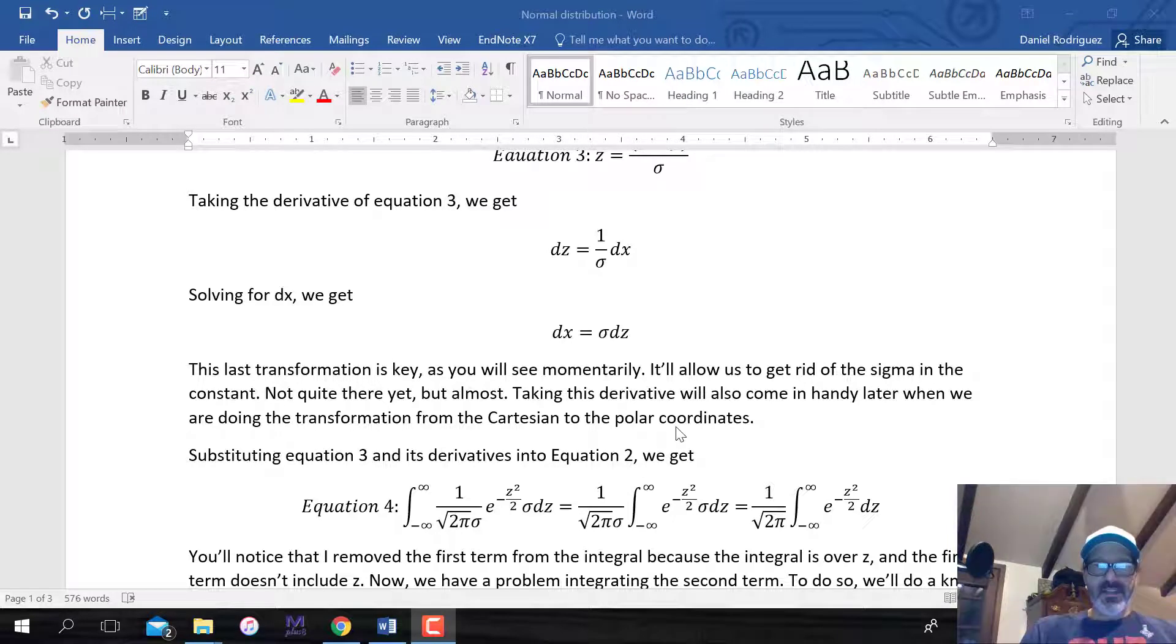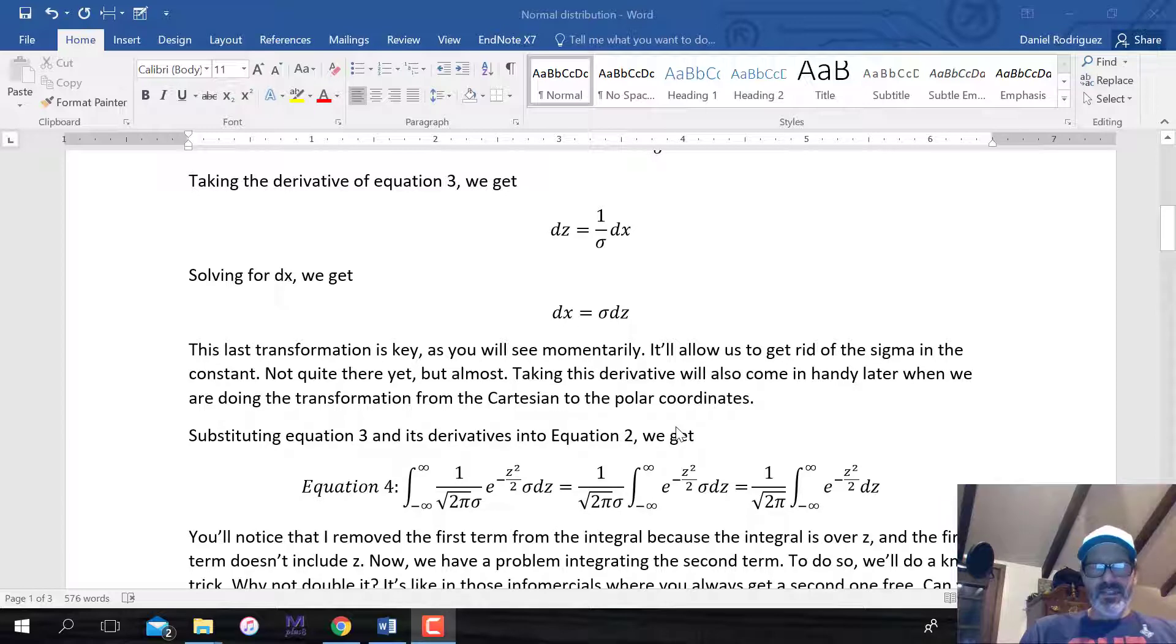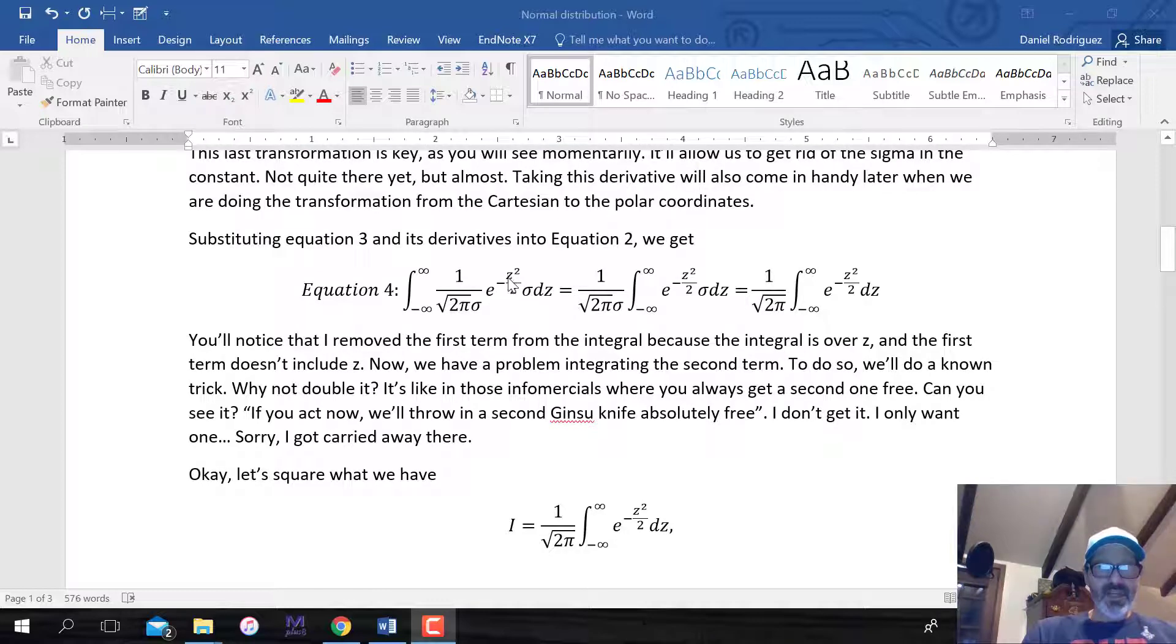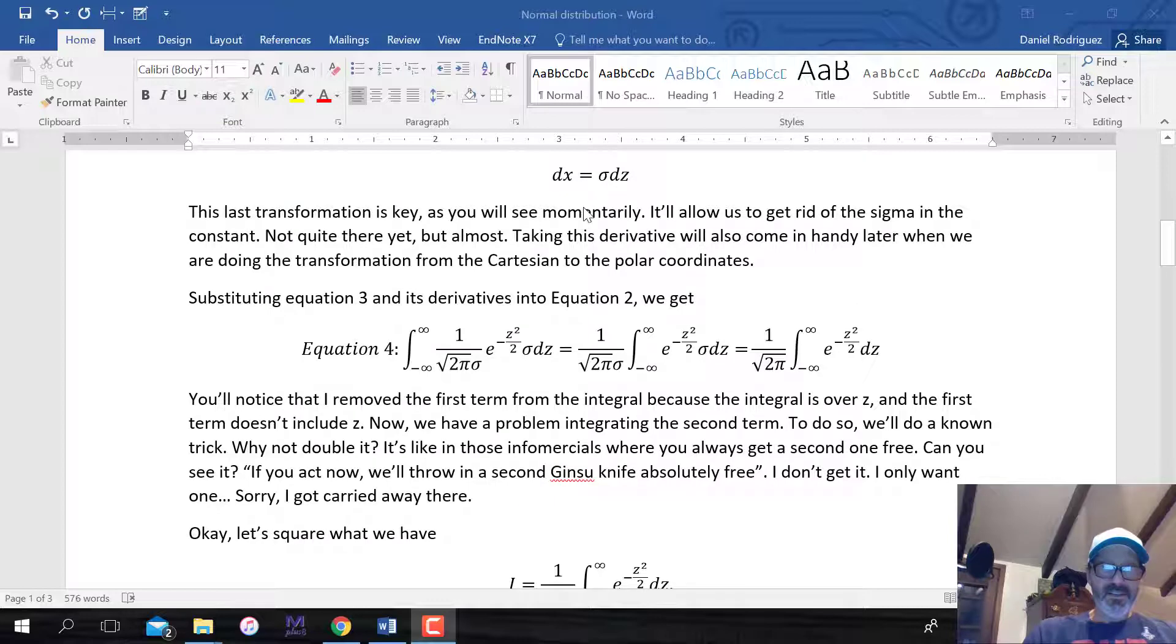We're not dealing with x's anymore. We take the derivative of this function with respect to x, and we get one over sigma dx, and then we can solve for dx. So it's sigma dz. This is going to be very important in a moment as we continue further. We'll have to do this again when we're converting between the Cartesian coordinate system to polar coordinates.